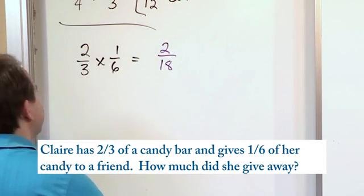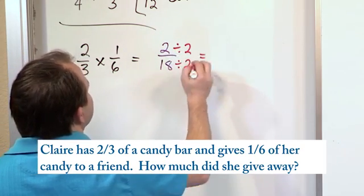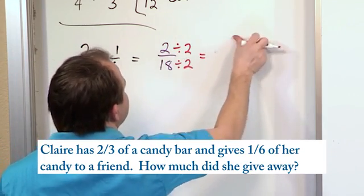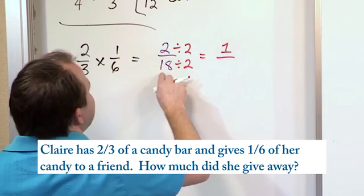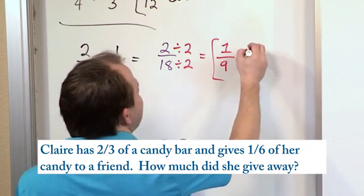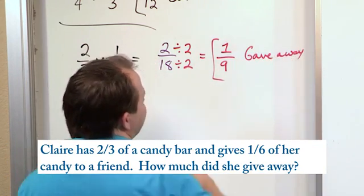We always want to simplify, and we know these are even numbers. So we divide the top by two and the bottom by two. Two divided by two gives me one. Eighteen divided by two gives me nine. So the answer is 1/9, which is how much candy she gave away.